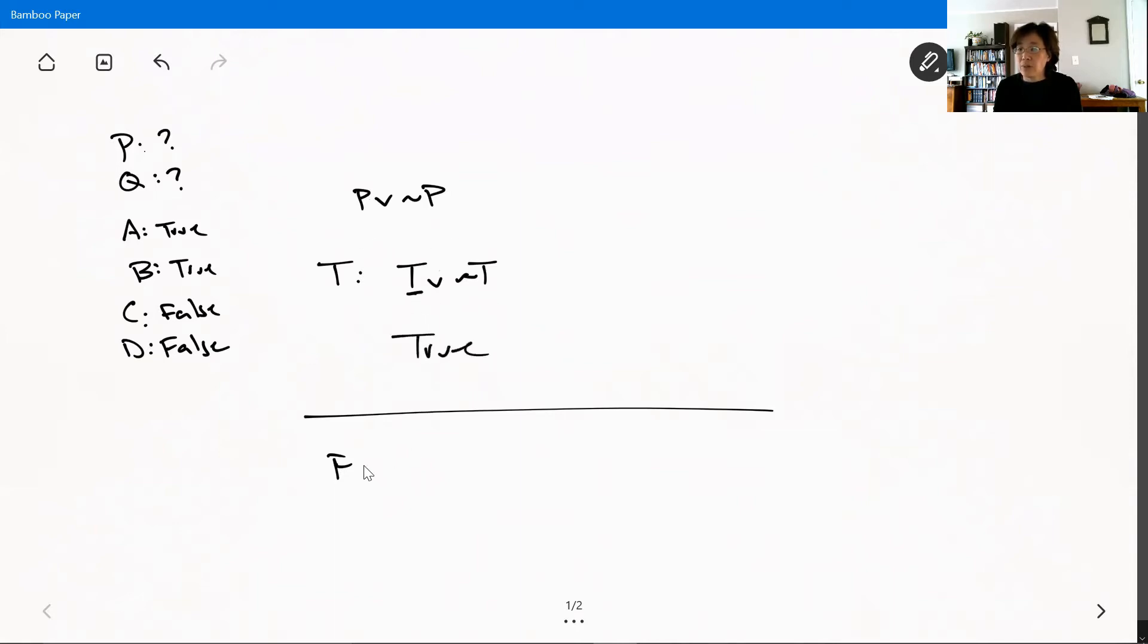Well, now suppose that P is false. If P is false, then the disjunction is actually still true. In this case, it's the right-hand disjunct that makes the sentence true. So then what about this one?